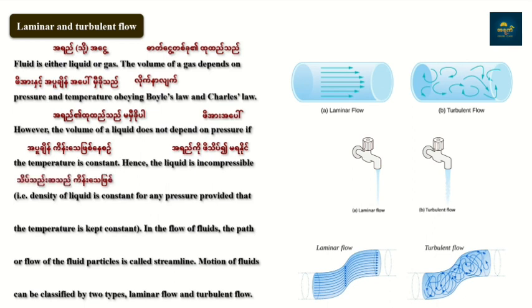The density of liquid is constant. Liquid density is related to mass per volume. Water density is approximately 1025 kg per cubic meter.